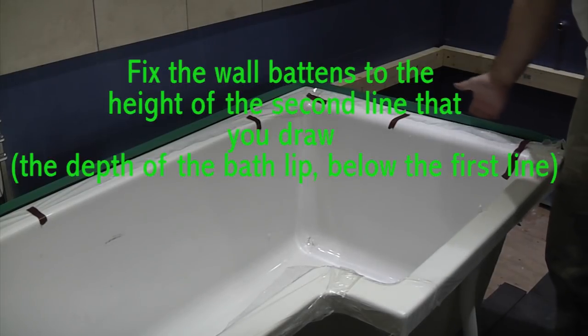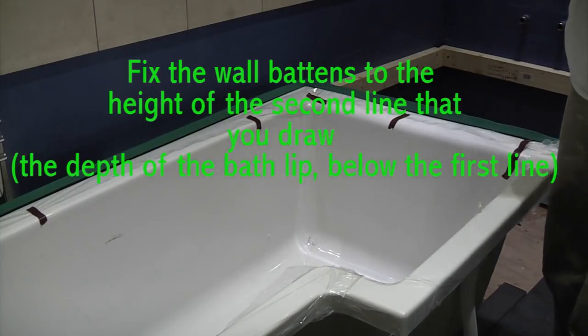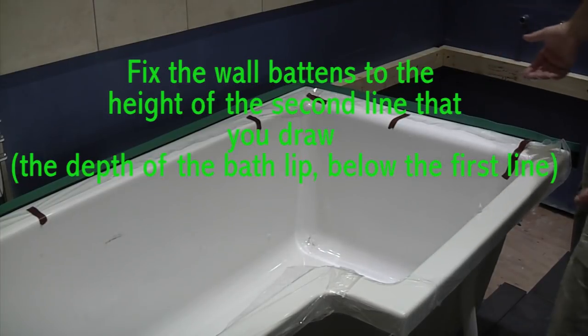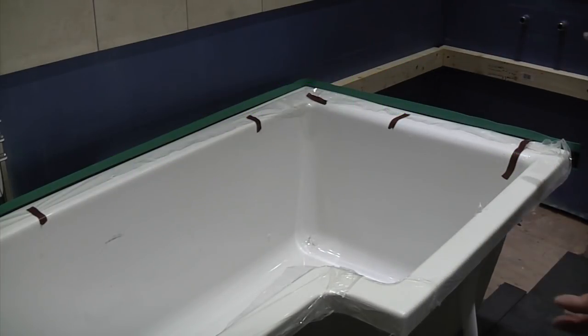We've got the sealing strip on the edge of the bath now, and I've also fit the waste ready. Now the bath is ready to be lifted into position. This is definitely a two-man job. It's not something you can do on your own, especially when you have got pipes that you need to lift it over. We're going to lift the bath up and move it into the exact position where it needs to be.